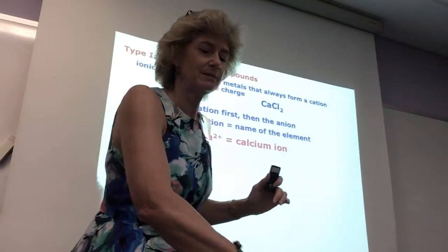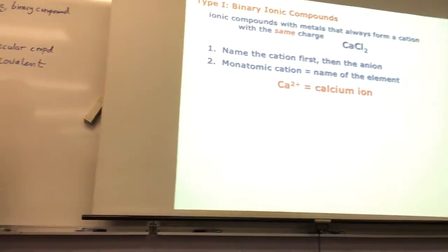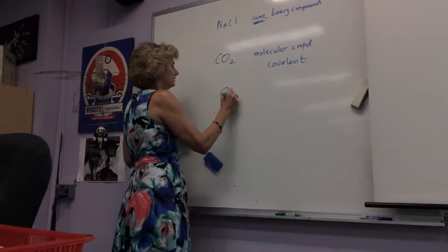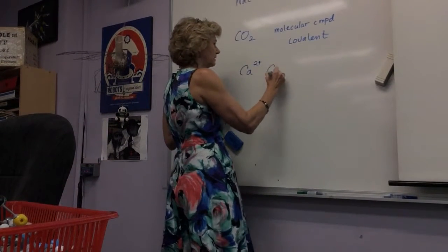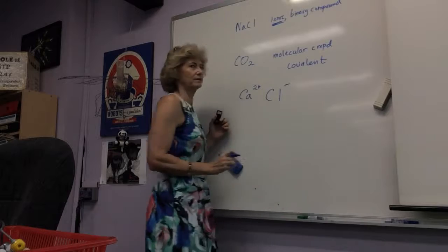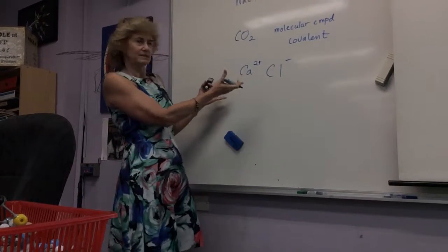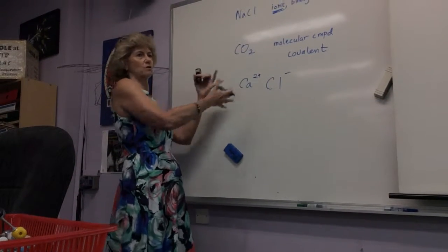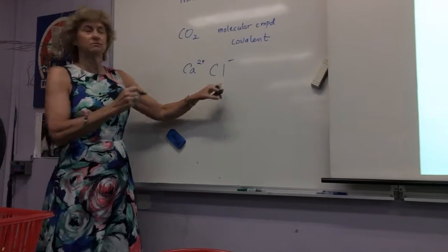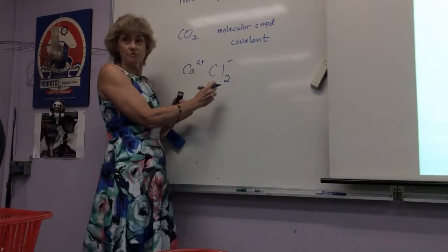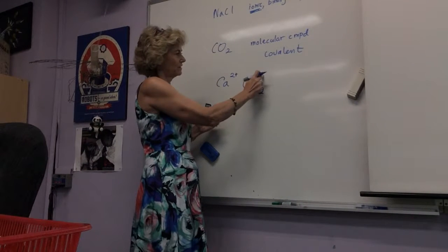Now, if you have a positive two charged particle and you associate it with a negative one anion, to make this thing neutral, how many of each one of these would you have? We need two of these. So now, in your mind, do this. It's a negative one particle. There's two of them.